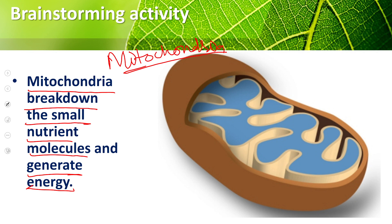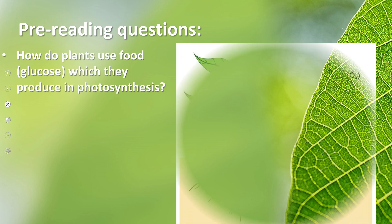Mitochondria is an organelle. What work does it do? Mitochondria break down the small nutrient molecules and generate energy. In past classes we learned about mitochondria. The nutrient molecules in plants come from photosynthesis — food and sugar molecules — which mitochondria break down to provide energy.